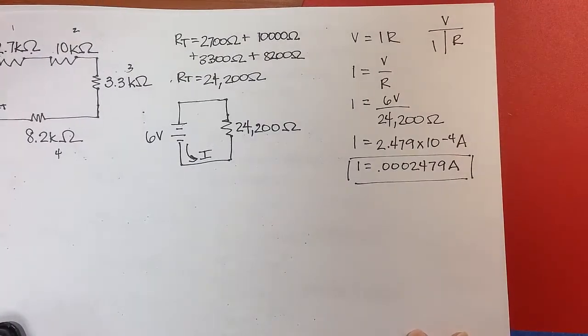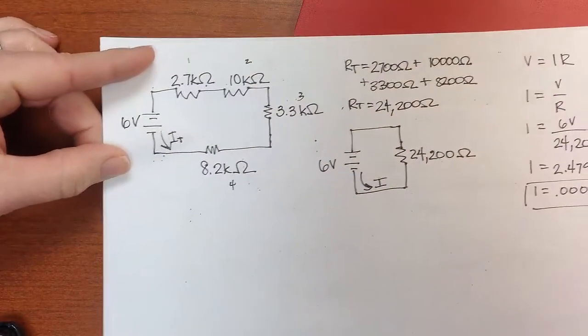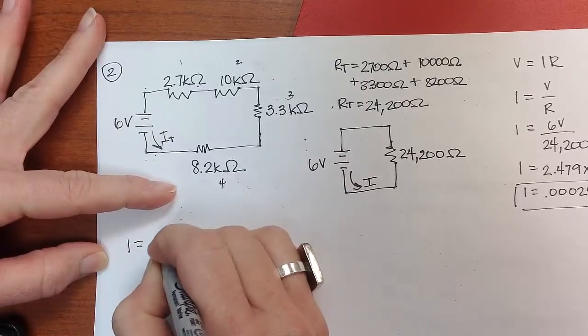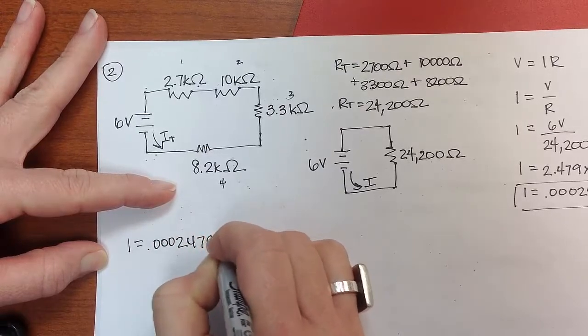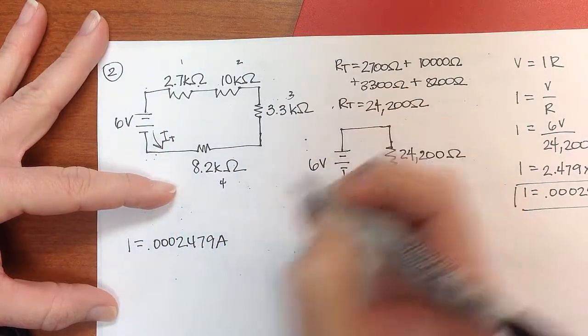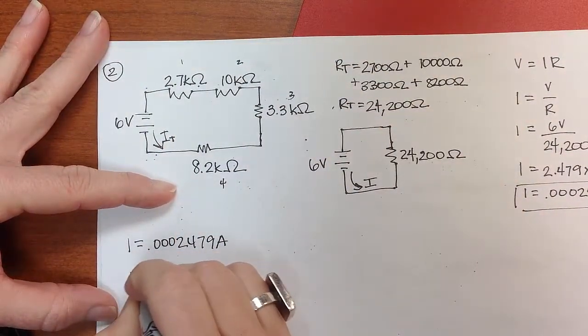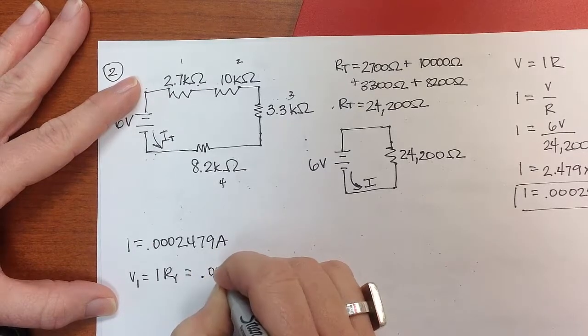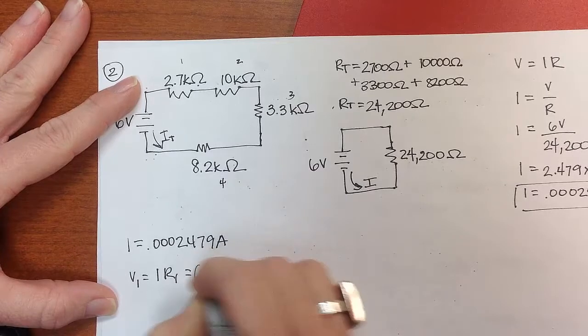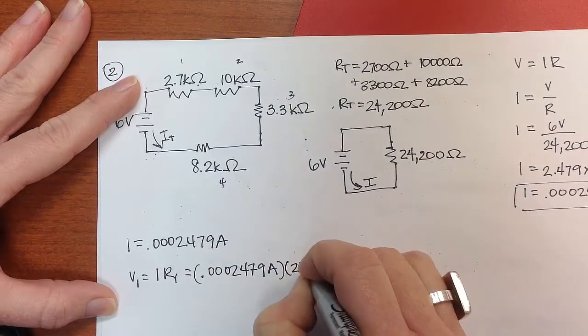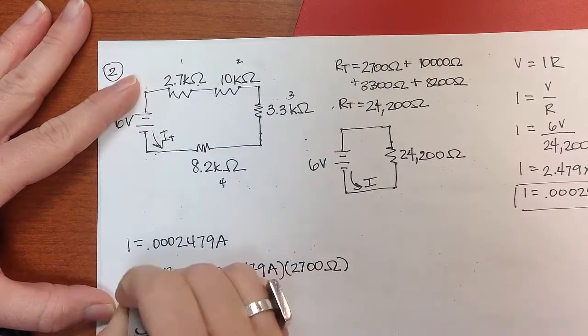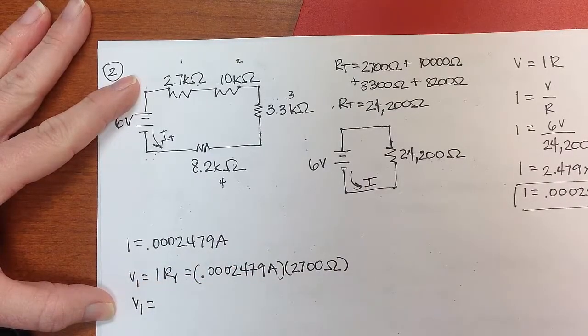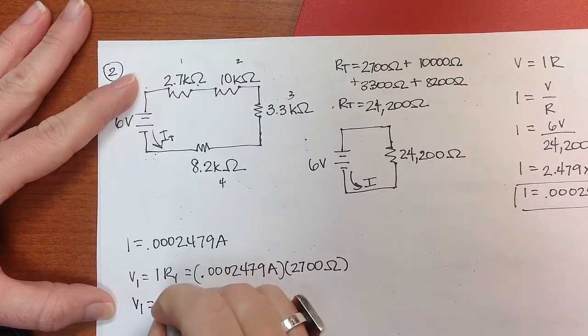Now let's go back and find the voltage drop across our expanded circuit. If I want to find the voltage drop across each component, I would do V1 equals I times R1. And that is going to be 0.0002479 amps times 2700 ohms.